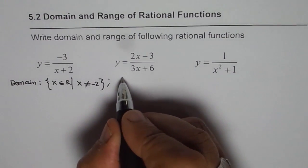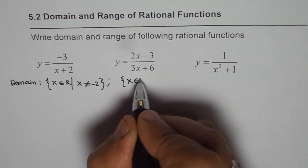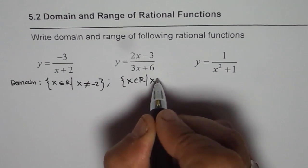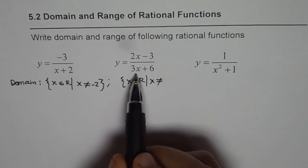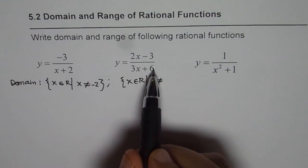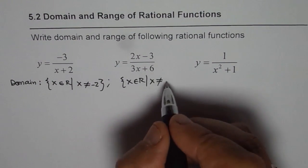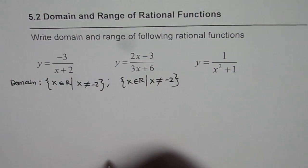For the second one, it is again x belongs to real numbers but x is not equal to—what value will make the denominator 0? You can equate to 0. So write 3x plus 6 equals to 0, minus 6 divided by 3 which is minus 2. So that is how you do it.